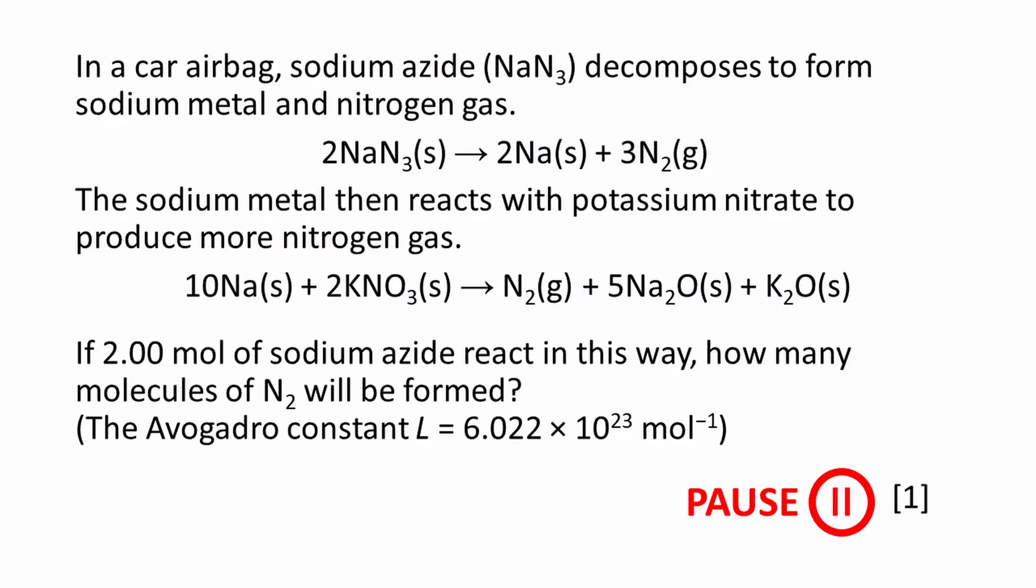Here's the question. In a car airbag, sodium azide (NaN3) decomposes to form sodium metal and nitrogen gas, and we're given the balanced equation. The sodium metal then reacts with potassium nitrate to produce more nitrogen gas, and once again, we're given a balanced equation. If 2.00 mole of sodium azide react in this way, how many molecules of N2 will be formed? And we're given the value for the Avogadro constant, L.